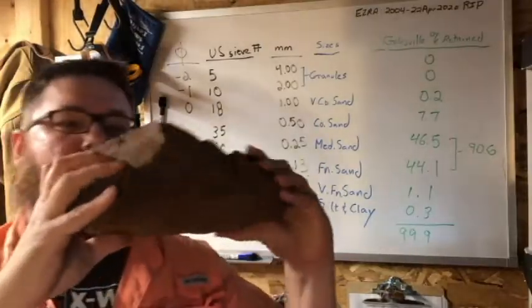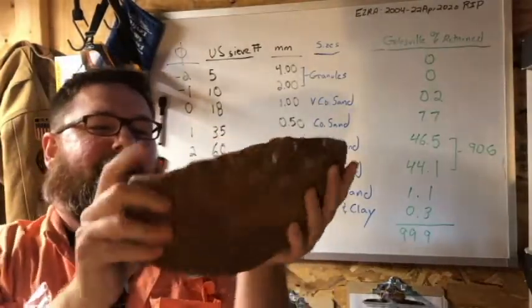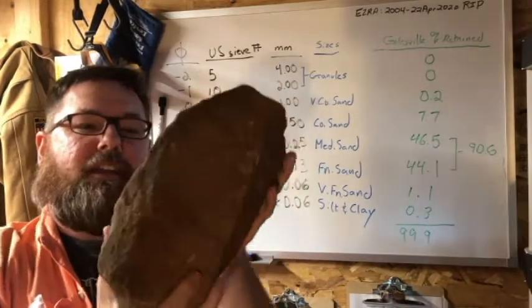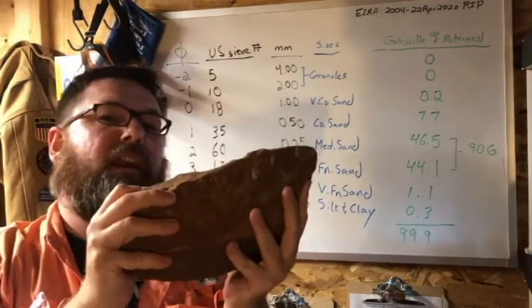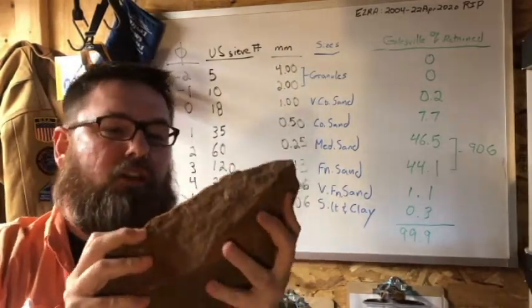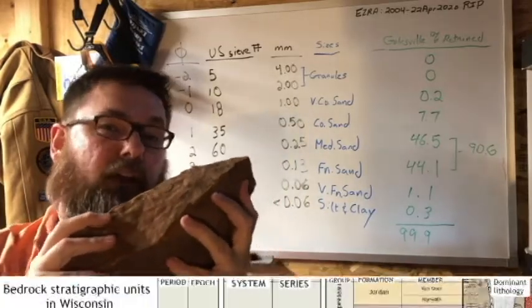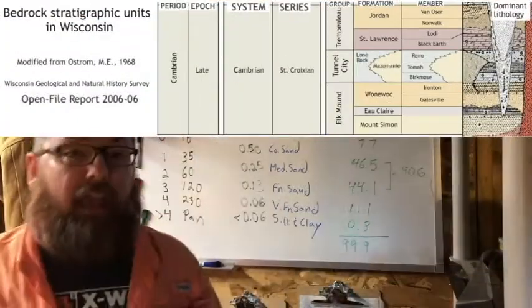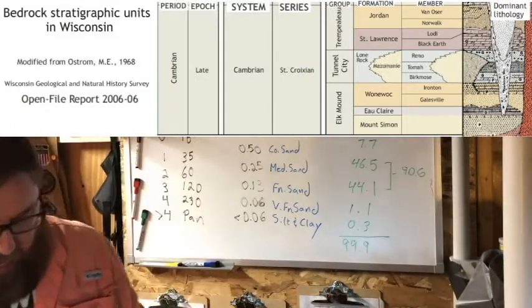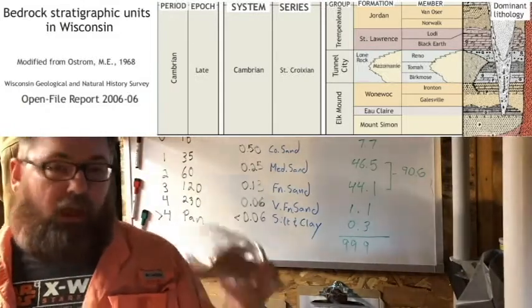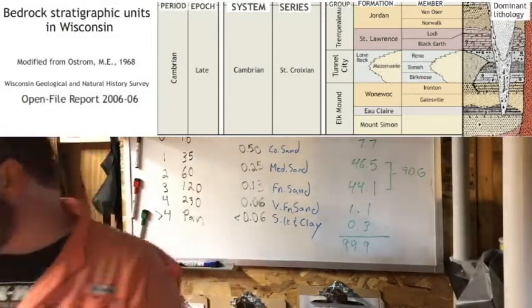Here is the bigger continuous piece. It's somewhat friable, indurated pretty good, but you can mechanically break it down with minimal effort in a mortar and pestle. Galesville is Cambrian in age, and I took this sample to do a grain size analysis.